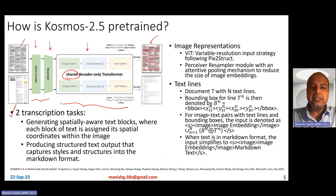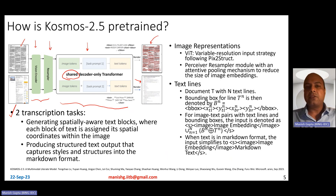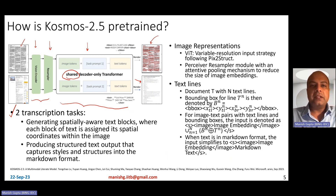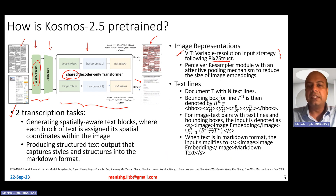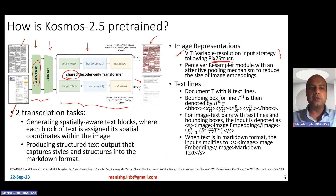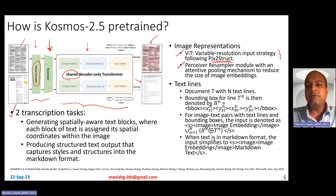On the other hand, the same shared decoder-only transformer can also generate structured text output that captures styles and structures in the markdown format. When providing the document as input, image representations are required. This uses a vision encoder which is essentially a ViT model. The particular architecture it follows for input encoding is a variable resolution input strategy, just like Pix2Struct — it divides the document into different grids and passes them one by one as input to the vision encoder. There is a perceiver resampler module right after the vision encoder, with an attentive pooling mechanism to reduce the size of the overall image embeddings.